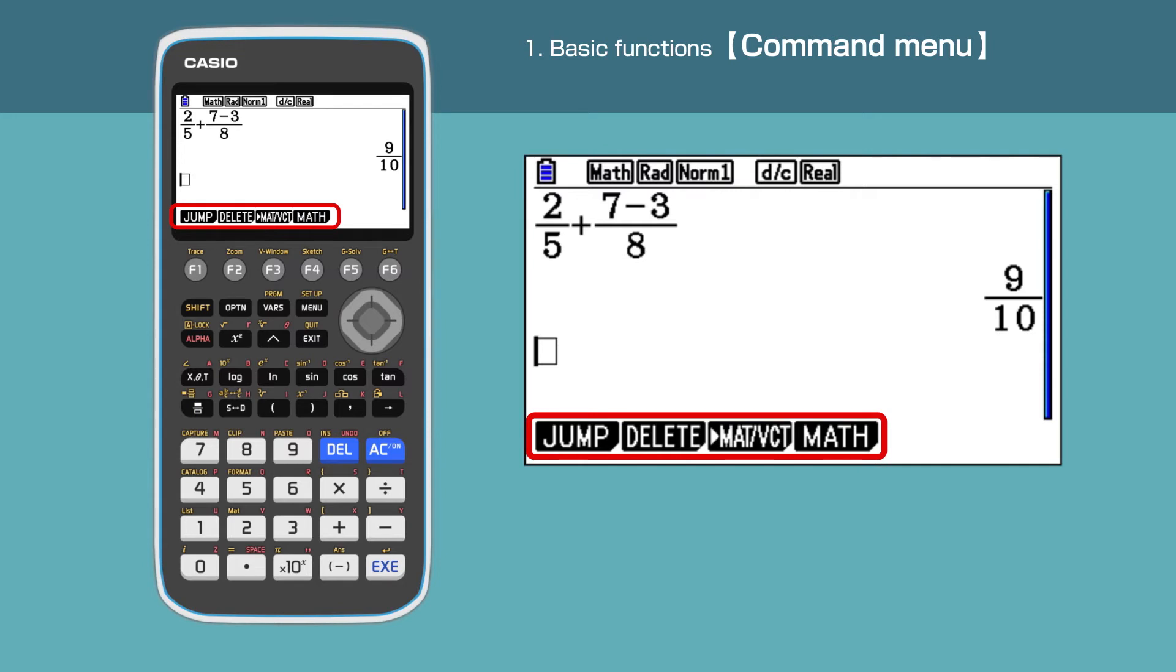You'll notice black boxes such as JUMP and DELETE at the bottom of the screen - these are contextual commands. The screen can display a maximum of six command items, which we can select by pressing F1 to F6 keys below the screen.